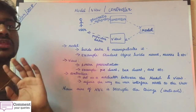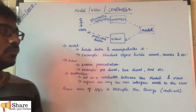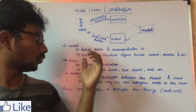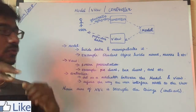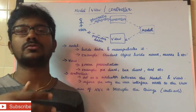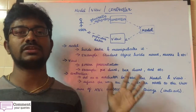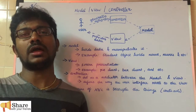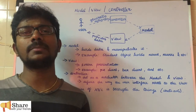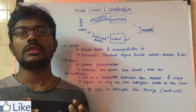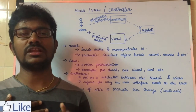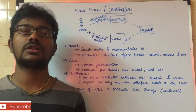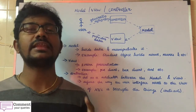The next important thing is the model. If you look at the model, the data is the model. For example, I have a student object. If I have a roll number, I have an object — a name, address, phone number, marks, grades, etc.